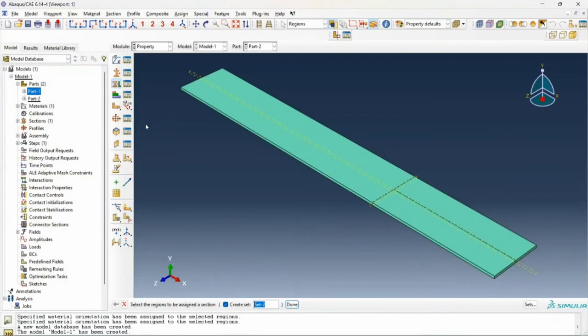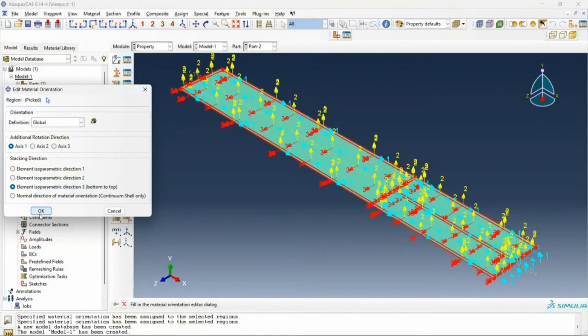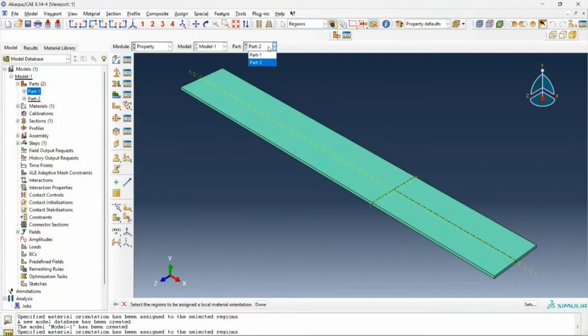Now since we've defined engineering constants in the material, these engineering constants are in particular directions. We need to tell Abacus what these directions are. For that, I'll click on assign material orientation. I'll select the cells to assign material orientation to, click on done, say use default orientation or other method, and simply assign the default orientation. I'll follow the same steps again for part 1.